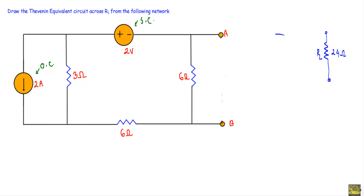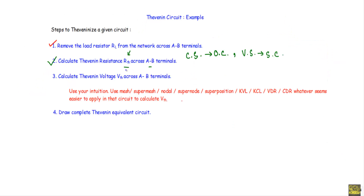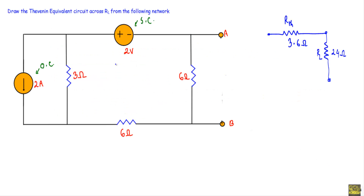So in the circuit, Rth is equal to 3.6 ohm. After that we will calculate the Thevenin voltage Vth across the A-B terminals. You can calculate Vth using mesh analysis, super mesh, nodal analysis, super node, superposition, KVL, KCL, VDR, CDR — whatever seems easier to apply in any particular circuit. Now we will calculate Vth with respect to the A and B terminals.